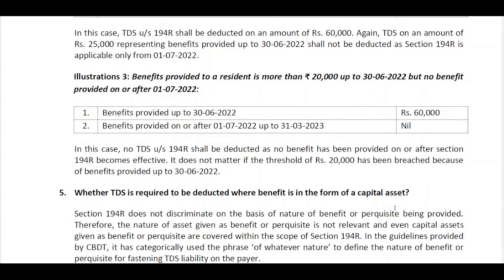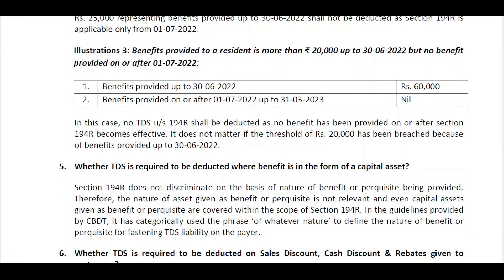The next question is whether TDS is required where the benefit is in the form of a capital asset. As discussed in the first question, the payer does not need to determine whether the asset is a capital or revenue asset in the recipient's hands — that is not to be checked by the payer. What matters is only whether a certain benefit is flowing from the payer to the recipient. Cases like laptops or motor vehicles given as benefits will also fall under this, and TDS needs to be deducted on the value.